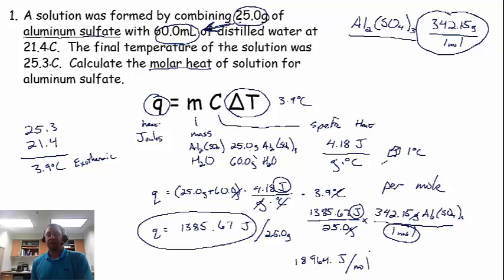18,964 and some decimal joules per mole. A lot of times, we don't report things in joules. We actually convert to kilojoules. So dividing that by a thousand, I'm not going to show you all the work on that, we get about, and you would round this using significant figures, 19 kilojoules per mole.